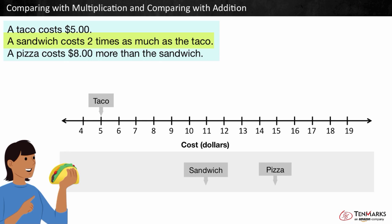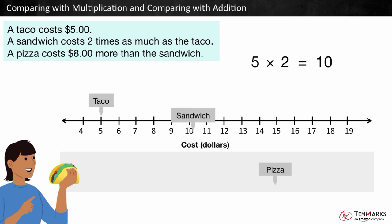A taco is five dollars. We can multiply five and two to find the cost of the sandwich. Five times two is equal to ten, so the sandwich costs ten dollars. We can drag the sandwich label to the ten.